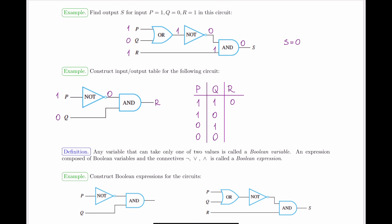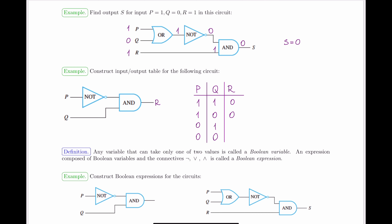Next case, P equals one and Q equals zero: feeding in zero, zero AND zero is still zero. Then for P equals zero and Q equals one: zero goes through the NOT gate giving one on the exit, and then one AND one goes into the AND gate — one AND one is one. Finally, for P equals zero and Q equals zero: one goes through NOT giving one, then one AND zero gives output zero.